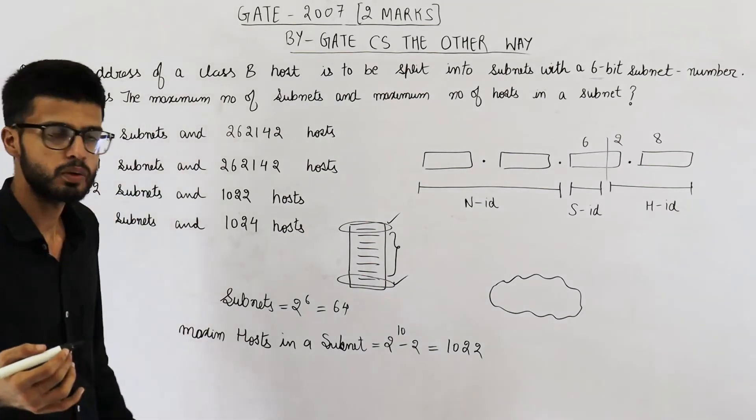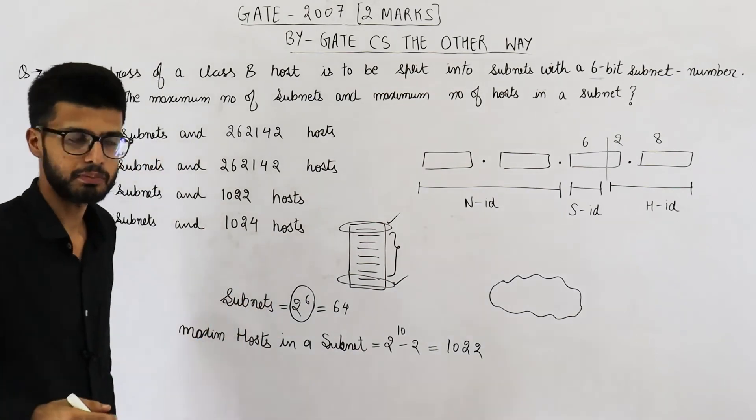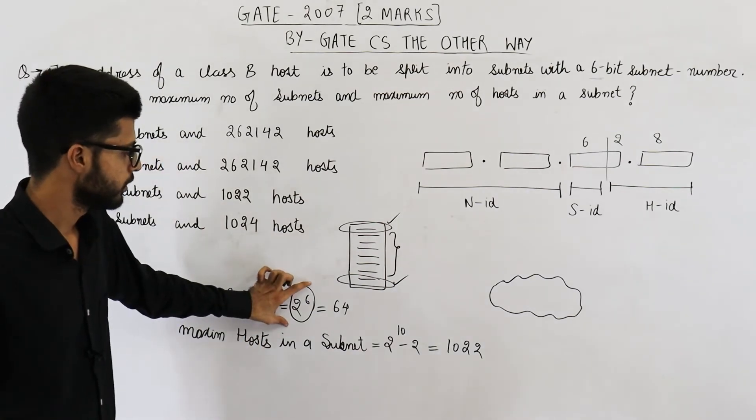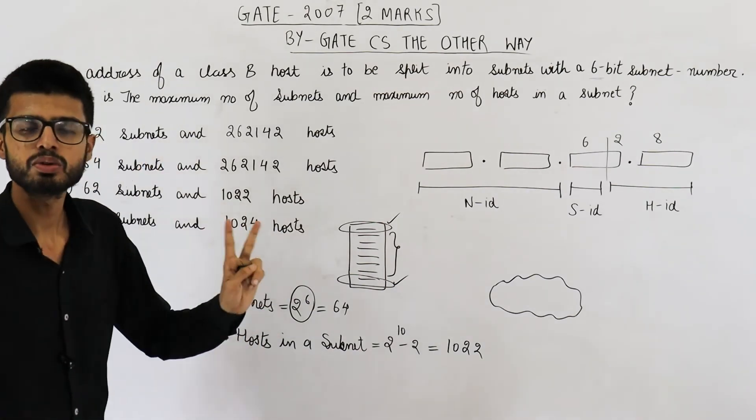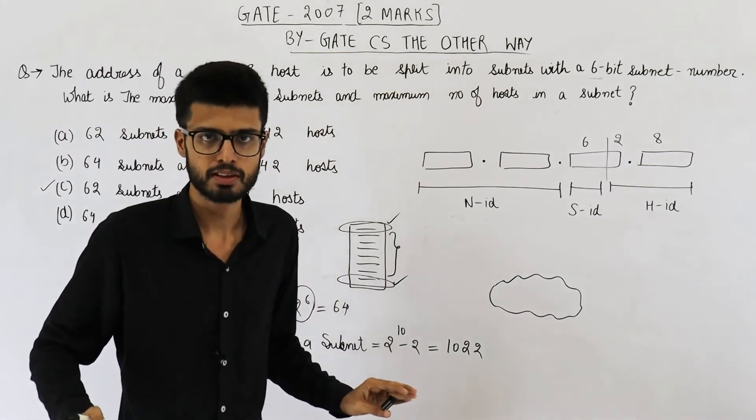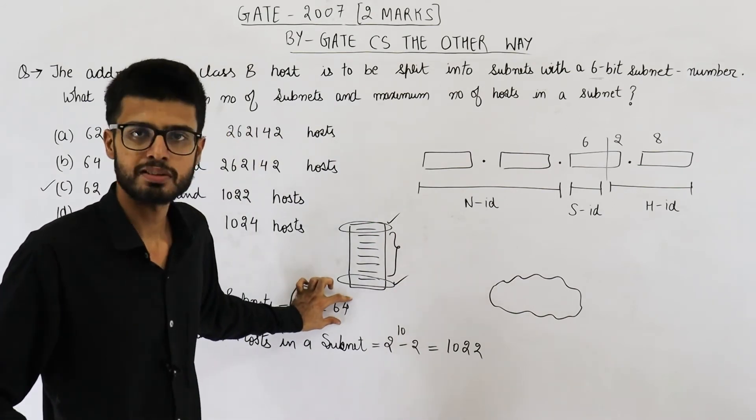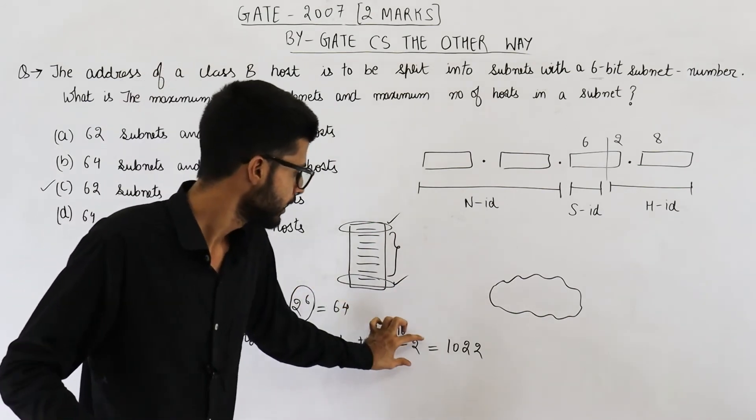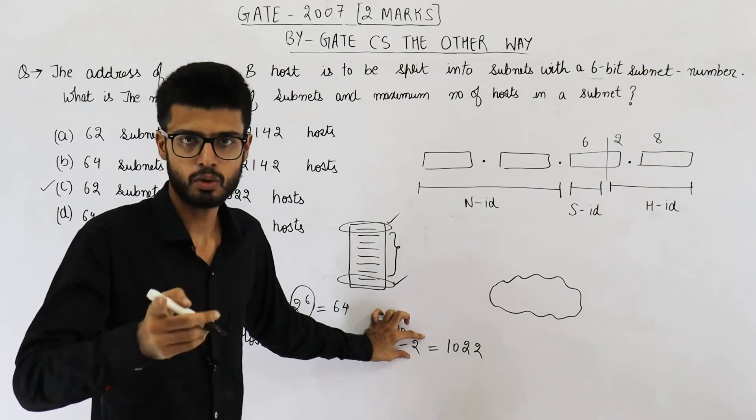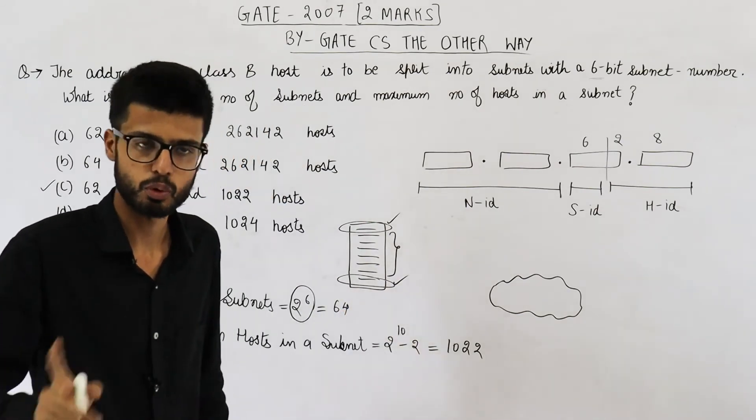How is 62 subnets correct? See, earlier we used to subtract 2 from the total number of subnets possible. There was a limitation that 2 subnets will not be used. But in modern networks, there is no such limitation. So these days, all 64 subnets can be used and 2 hosts cannot be configured. So total number of IPs minus 2 will be the number of hosts.